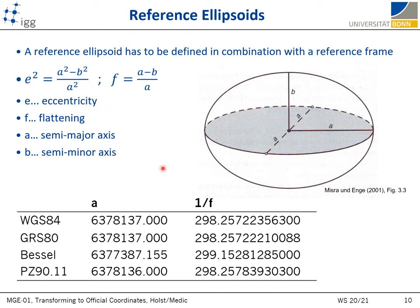There are several realizations of the reference ellipsoid. Some are actively used, like WGS-84, which is used in the US for GPS navigation; GRS-80, which is used globally and often in Europe; and Russian Parametri Zemli, which is used for GLONASS navigation. Bessel is a historical ellipsoid that was used in Europe.